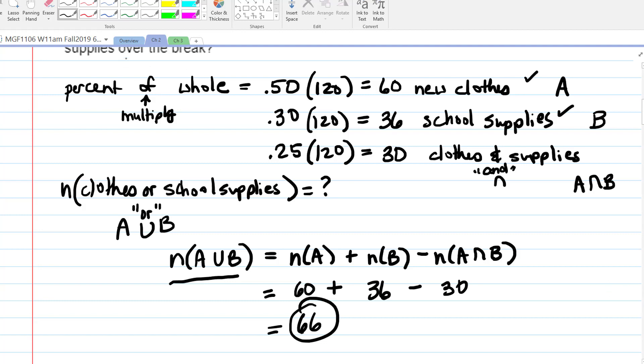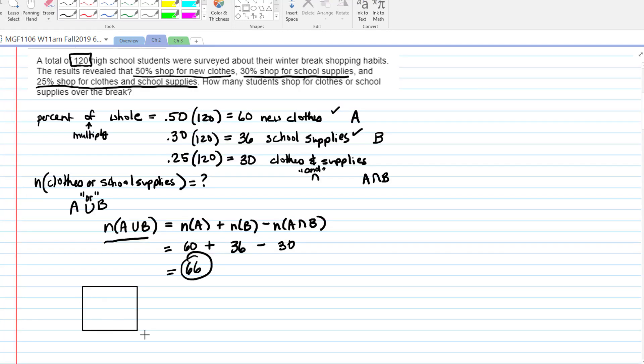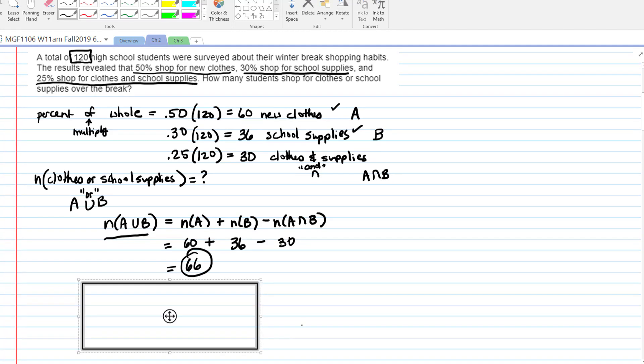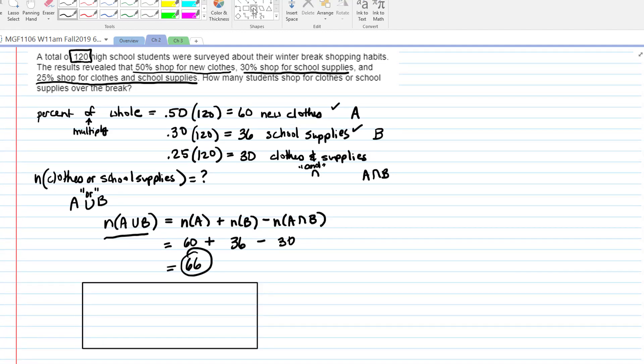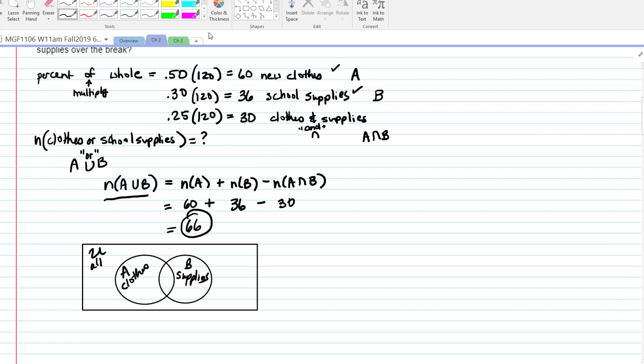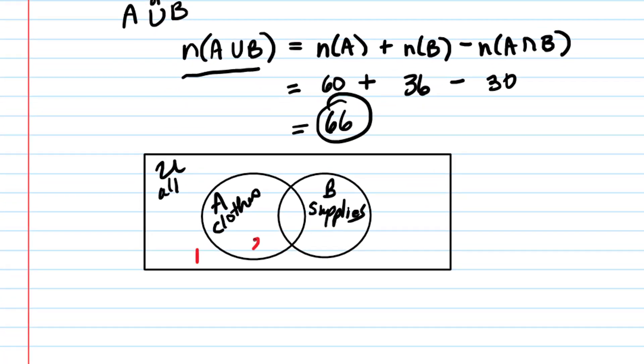If you don't like that approach, draw a picture. Let's draw a Venn diagram and use it to do the same thing. We're going to have our universal set, which is the 120 high school students that were surveyed. And then we're going to have a set which represents A, our new clothes. And we're going to have a set that represents B, or school supplies. I'm going to number the regions. You do not have to number the regions. I'm only doing this so we can discuss it. Let's call them 1, 2, 3, and 4.